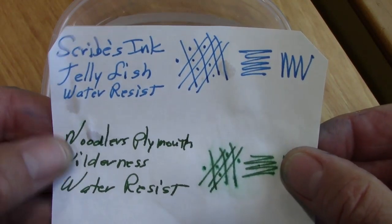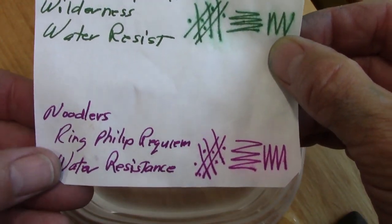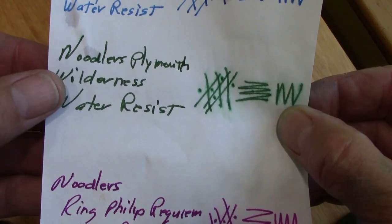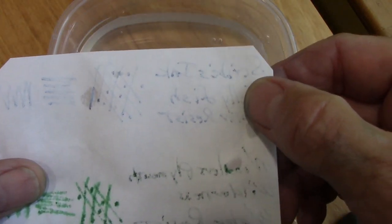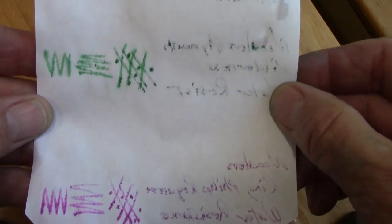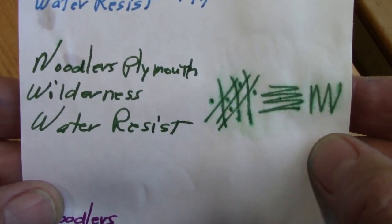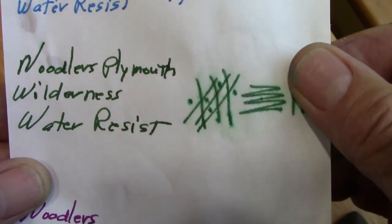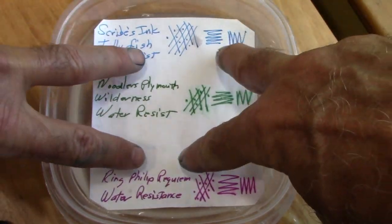So here's some copy paper that I wrote on with the Jellyfish ink and two other of the Noodler's pigmented inks that I got at the Boston Pen Show - the green one and a purple one. If we turn this over, you see a little bit of show-through and a minor amount of bleed-through with the Scribes ink, but when you go to the Noodler's inks you'll see a lot more bleed-through than you had with the Jellyfish. This has been already tested in water - you can see kind of how the paper is crinkly.